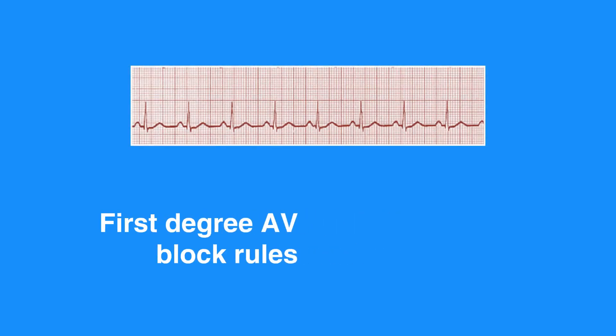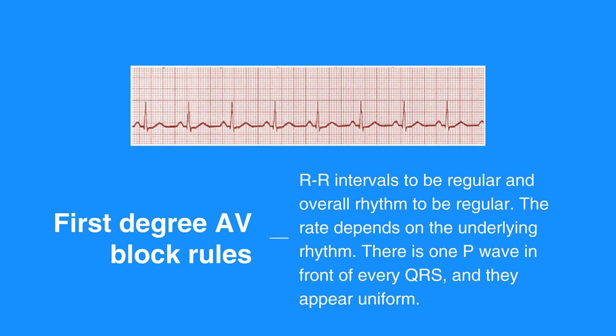First degree AV block rules include RR intervals to be regular and overall rhythm to be regular. The rate depends on the underlying rhythm. There is one P wave in front of every QRS and they appear uniform. The PR interval measures more than 0.2 seconds in duration and is consistent. The QRS complex measures less than 0.12 seconds.